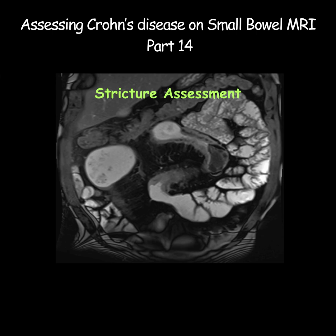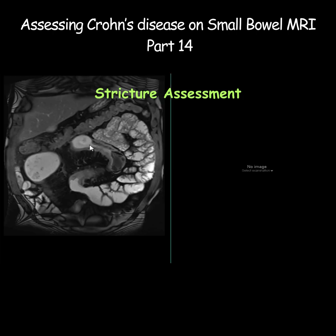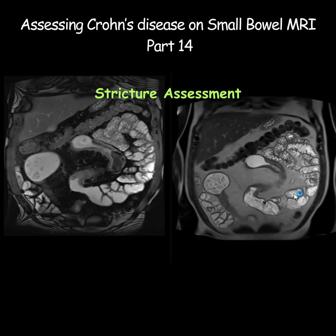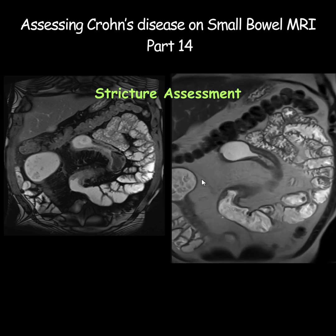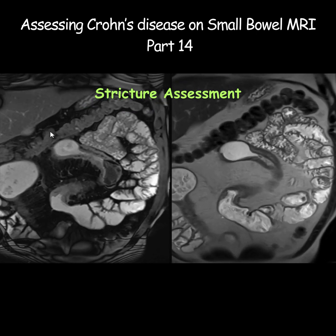We can also compare the T2 signals between the pre and post fat-suppressed images and see what the contents of the structure are. This image is fat suppressed and this is without fat suppression. Now you can see the abnormal bowel wall thickening — can you see the difference between the two?